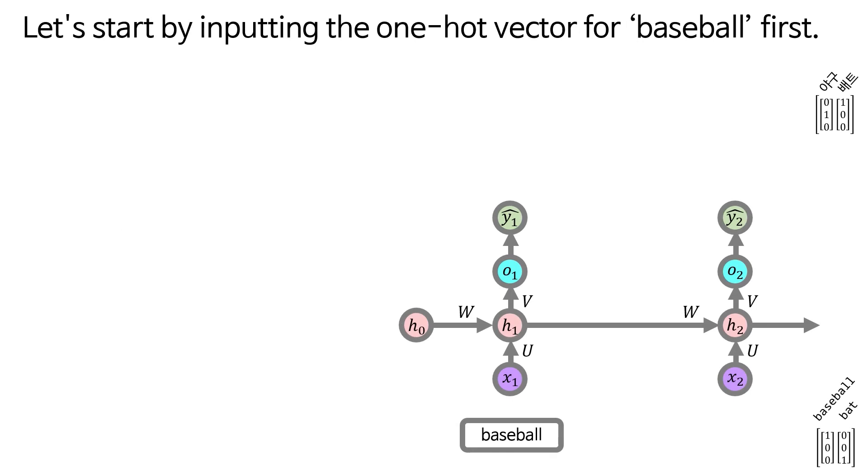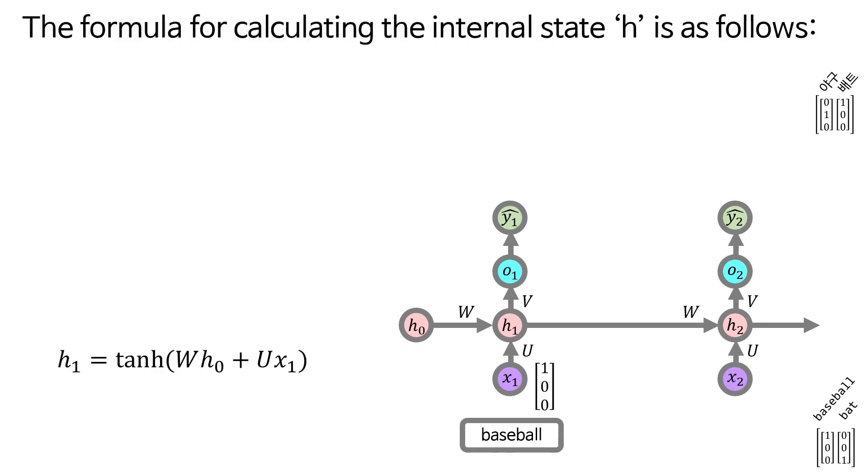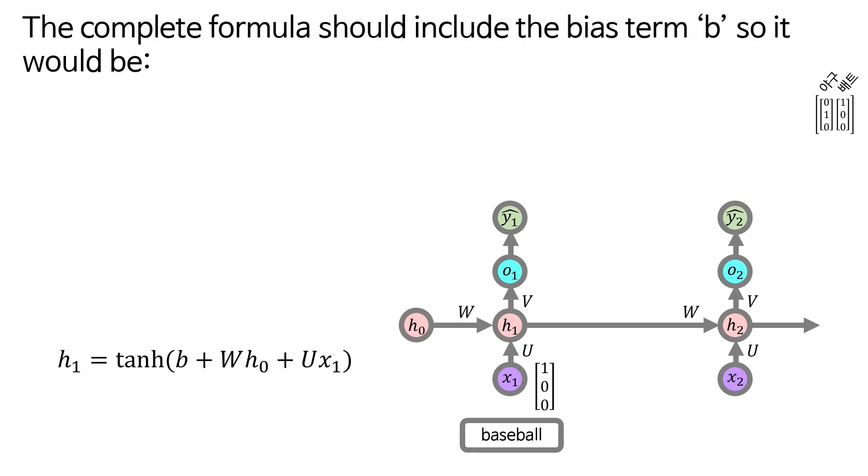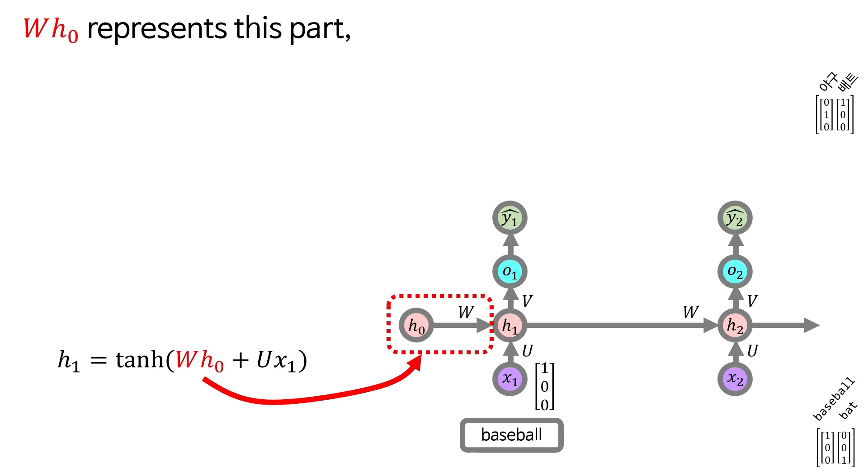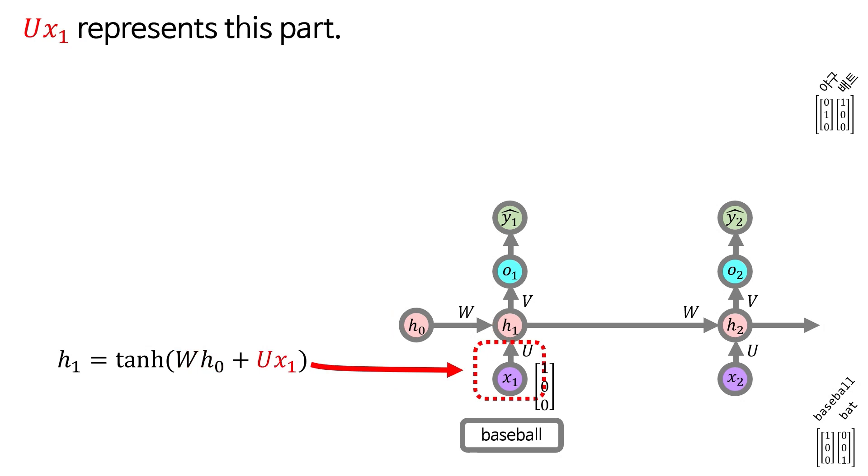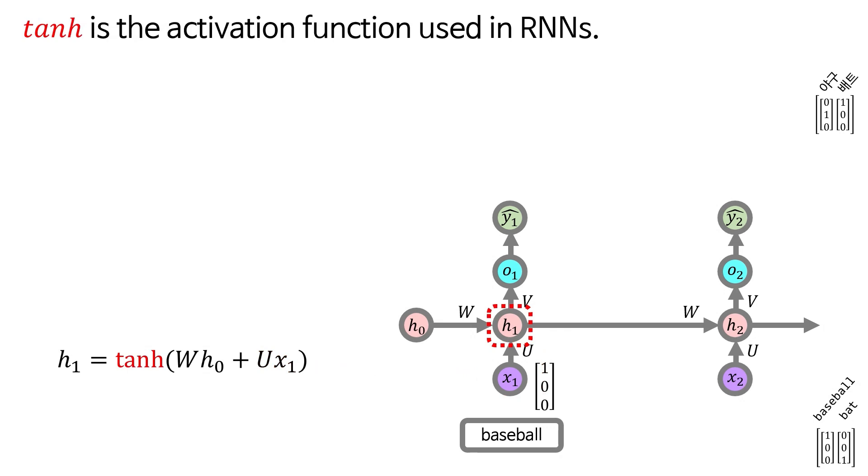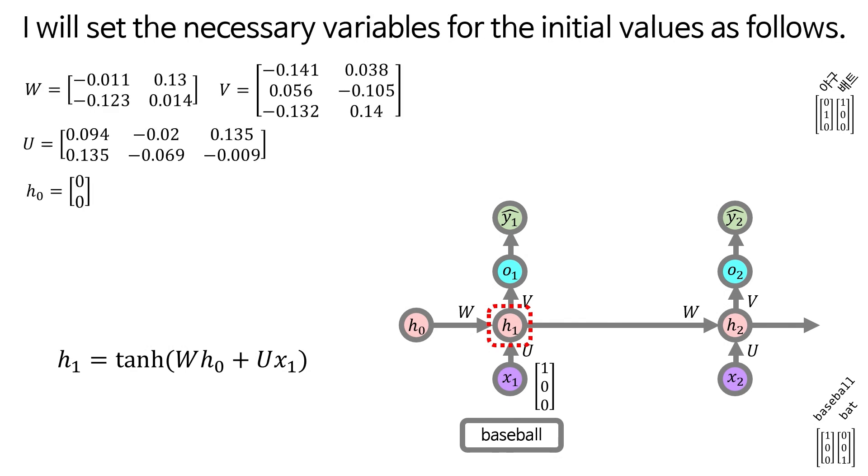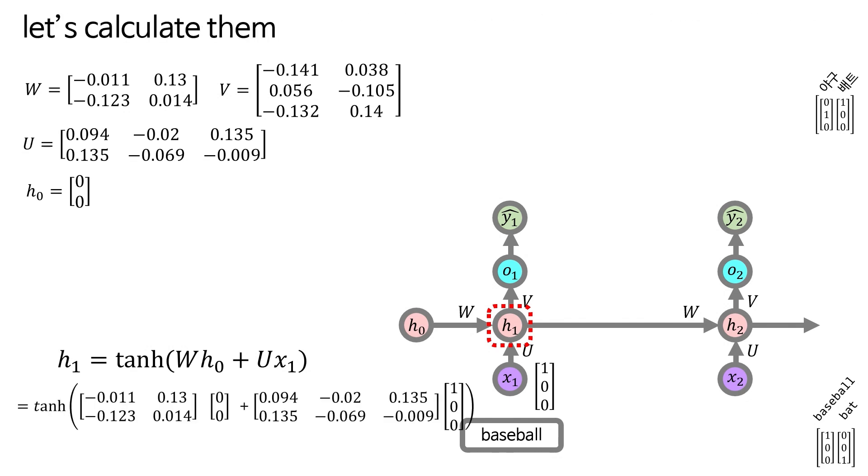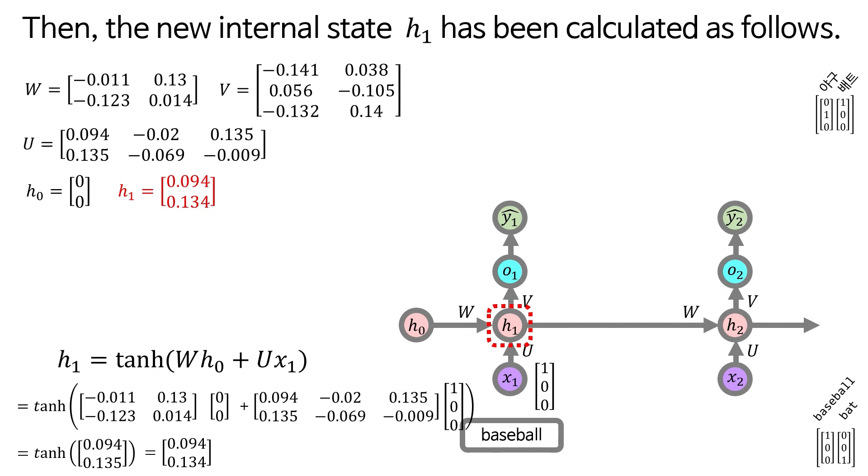Let's start by inputting the one-hot vector for baseball first. The formula for calculating the internal state h is as follows. The complete formula should include the bias term b. In this video, for the sake of simplicity, let's omit the bias term from the calculations. WH0 represents this part. UX1 represents this part. Hyperbolic tangent is the activation function used in RNNs. Alright, let's go ahead and perform the calculations by inputting numbers. I will set the necessary variables for the initial values as follows. Let's calculate them.